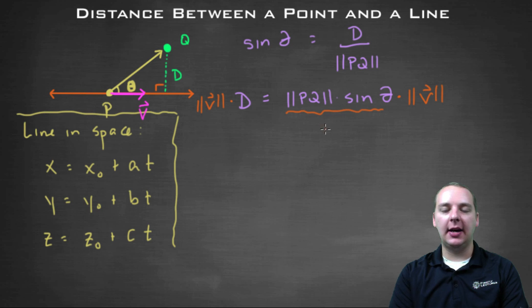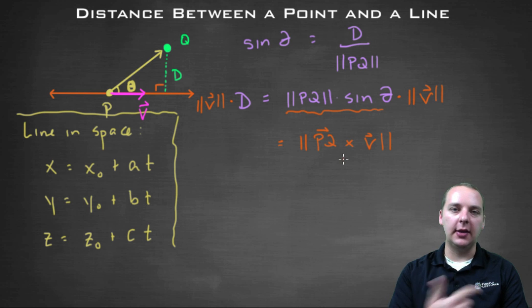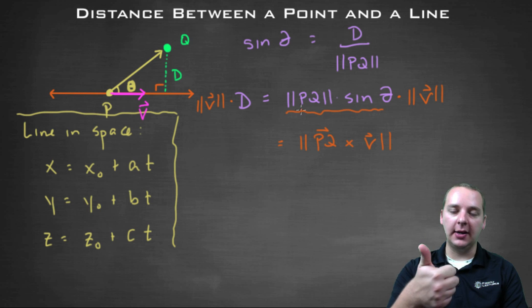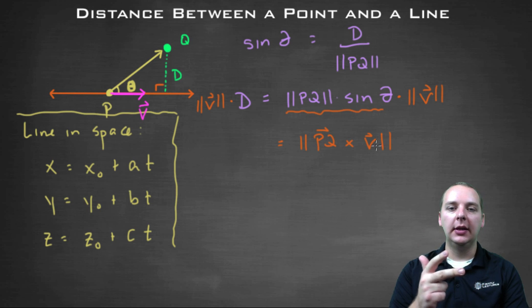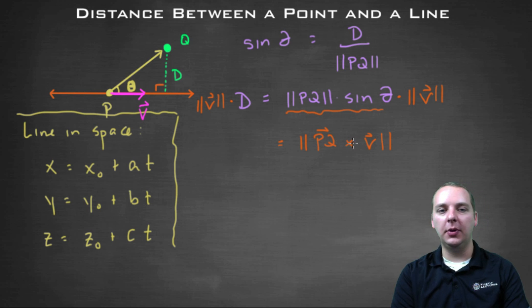Alright, now this right hand side, if you recognize this, this is actually the formula for the magnitude of PQ cross V. Very clever little observation here. Again, go back to that formula. Magnitude of PQ cross V would be magnitude of PQ times the magnitude of V times the sine of the angle between them. So that condenses to this little formula.